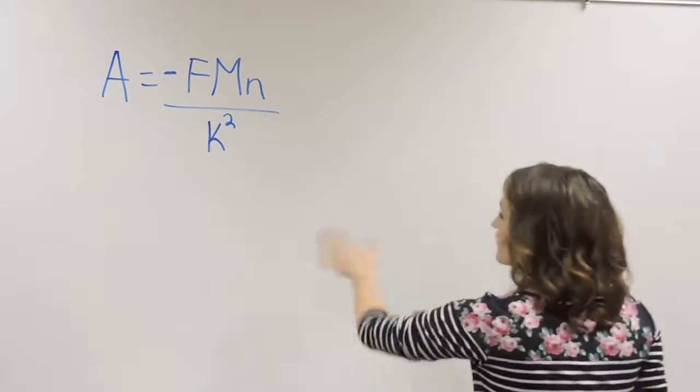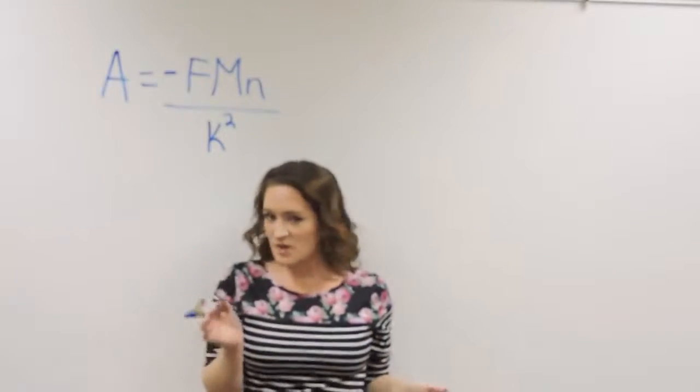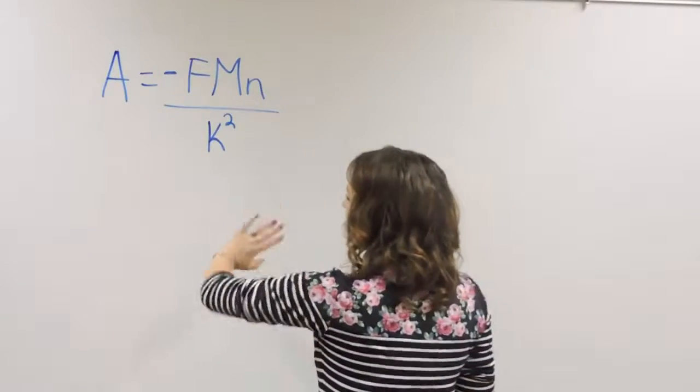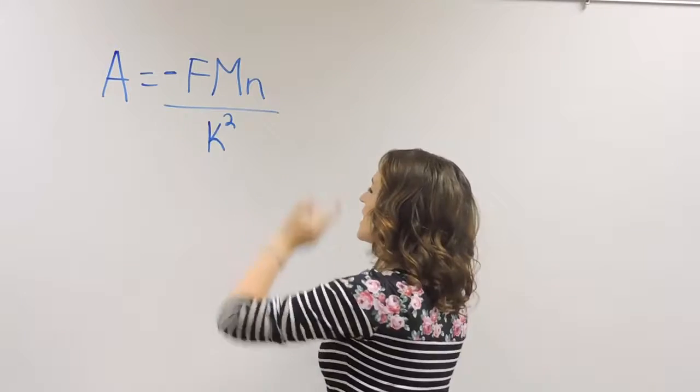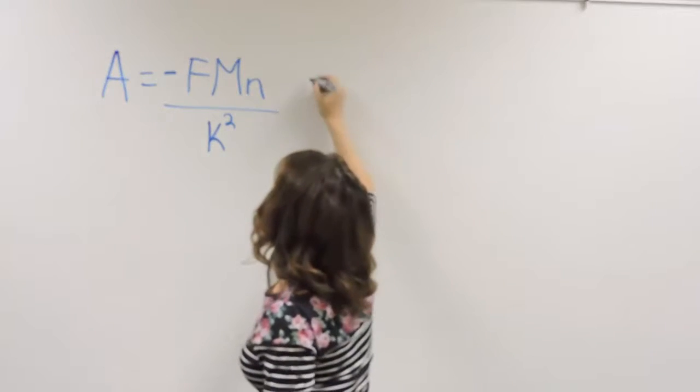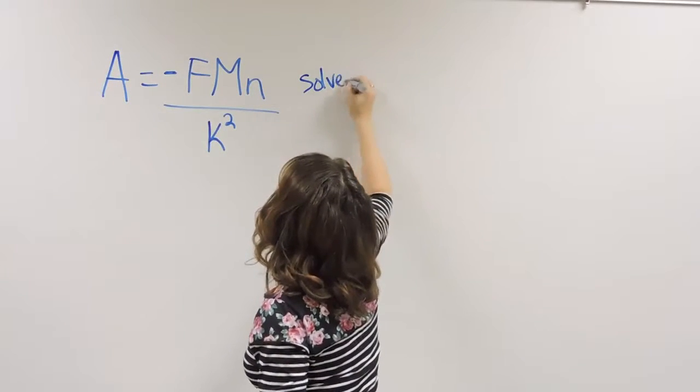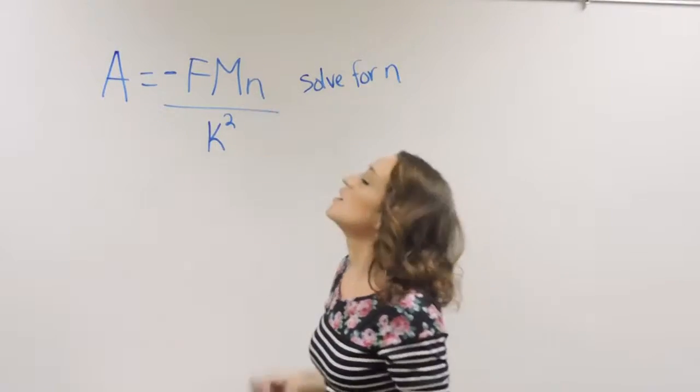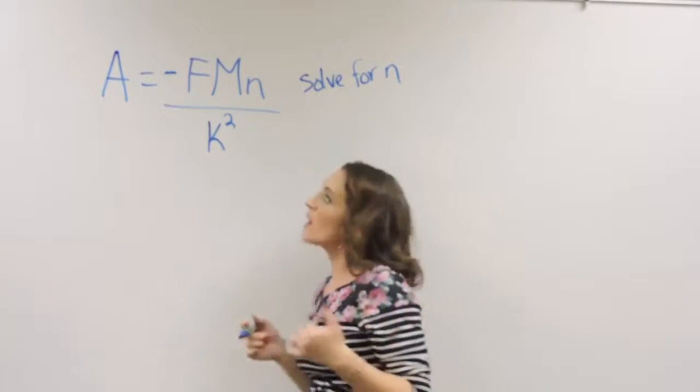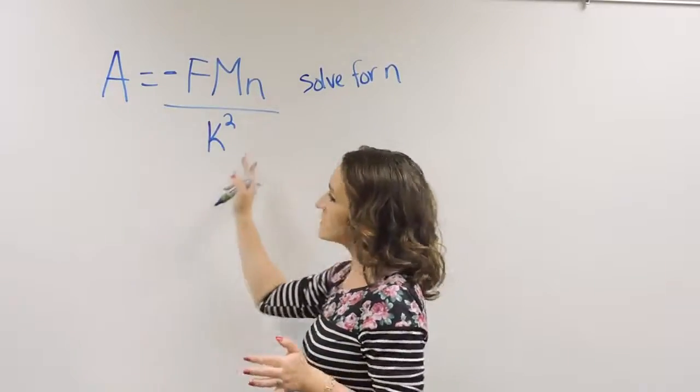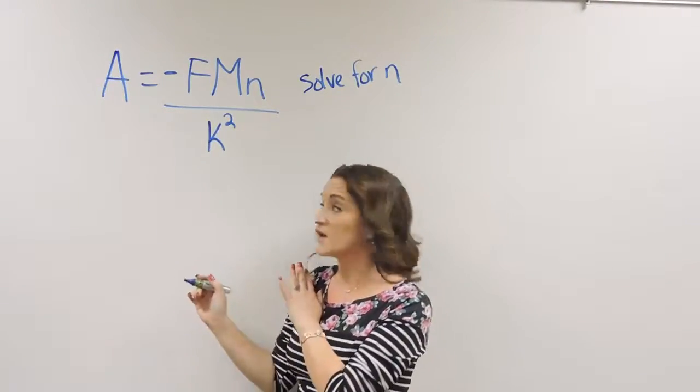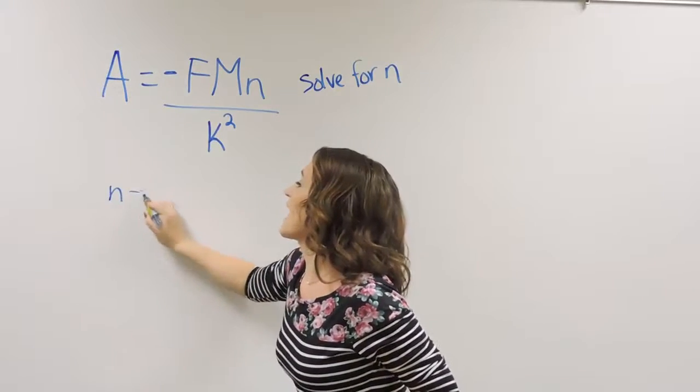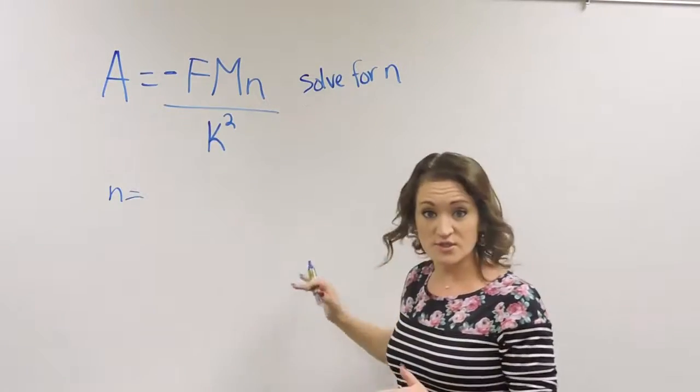So here I have this formula, no idea what it really stands for here, A equals negative FMn over k squared. And what we're going to do is we're going to solve this for n, so for little n right there. So essentially what they're wanting here is instead of having this equation set up in this way here, they want this to look like n equals so-and-so.